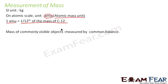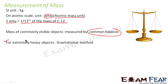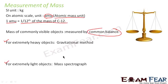Commonly visible objects are measured by the common balance, which all of you must have seen in a grocery shop. For extremely heavy objects we employ the gravitational method, which is based upon Newton's universal law of gravitation — we will discuss this when we study gravitation. For extremely light objects we have a device called the mass spectrograph, which we will discuss when we cover the chapter on instruments.